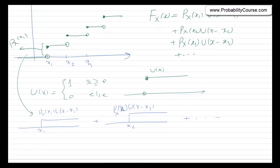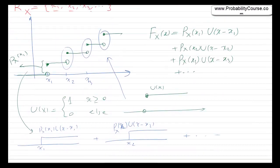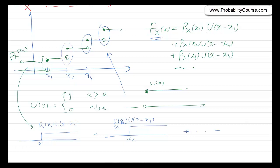Now, the problem here is: if I want a PDF, the CDF is not continuous — we have jumps — so this function is not differentiable and I cannot differentiate it to obtain a PDF. What we are going to do is cheat a little bit: we try to define a function that is the derivative of this CDF. To do so, it suffices to find the derivative of the unit step functions U, since the P_X values are just constants. If somehow we can differentiate U, we can differentiate the CDF — and that is the idea behind the delta function. Basically, the delta function can be thought of as the derivative of U.